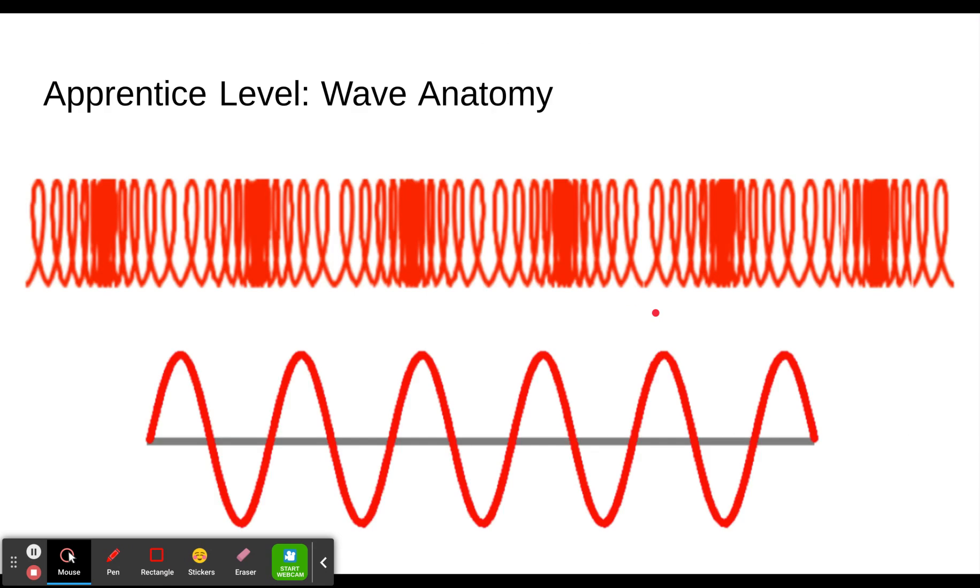So the apprentice level talks about wave anatomy and basically it's making sure you can identify the places where the medium is displaced a maximum amount. In terms of a longitudinal wave like this one, we're looking at places where the pressure is greater or less than normal. At a spot like this, we can see it's squeezed together and so we call that a compression. At other spots, like right here, it's more spread out than normal, less pressure. And so places with less pressure are called rarefactions.